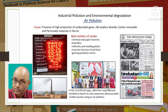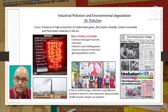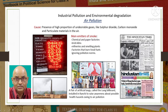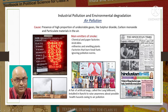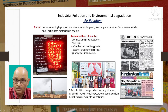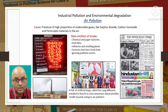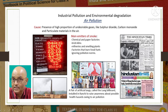Sometimes we hear news of toxic gas leaks from industries. You must have heard of the Bhopal gas tragedy that occurred in 1984 - it is known as the world's worst industrial disaster. About 30 tons of methyl isocyanate gas killed more than 15,000 people and affected over 6 lakh workers. Recently in May 2020, there was a news of styrene gas leak from LG Polymers chemical plant in Vishakhapatnam - 12 people were reported dead and more than a thousand became sick after being exposed to the gas.